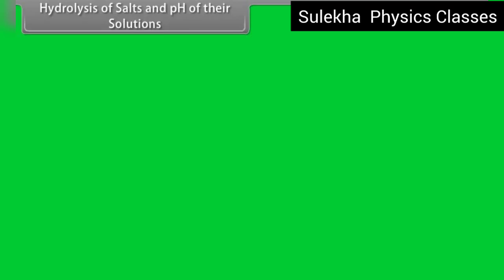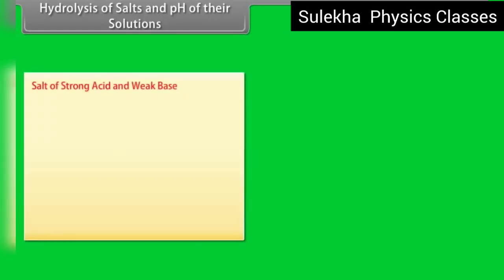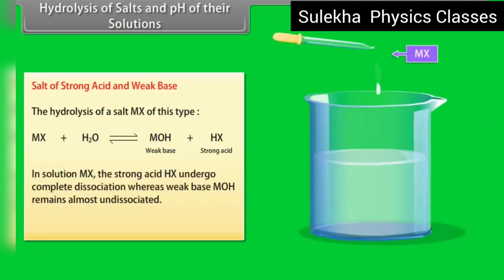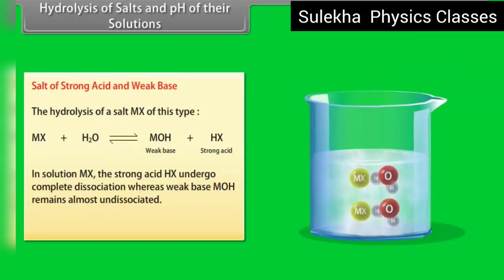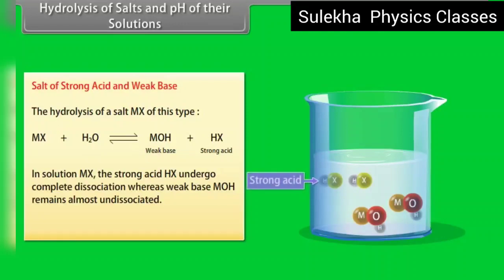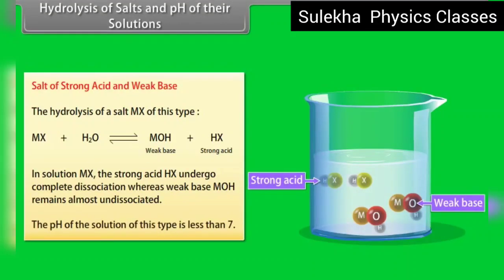Salt of a strong acid and weak base: the strong acid HX undergoes complete dissociation, whereas the weak base MOH remains almost undissociated. The pH of such a solution is less than 7.